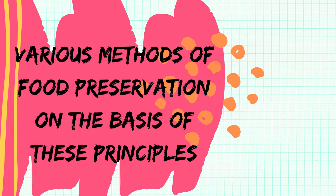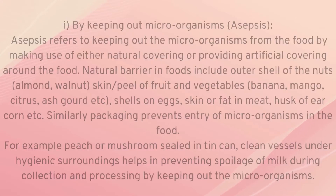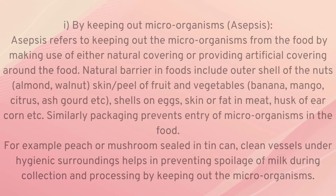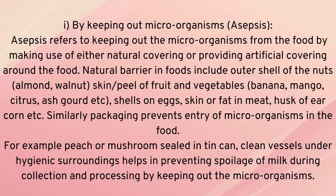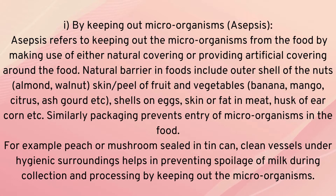Asepsis refers to keeping out microorganisms from food by making use of either natural or artificial covering. Natural barriers in foods include outer shells of nuts such as almonds and walnuts, skin or peel of fruits and vegetables such as banana, mango, citrus fruits, and eggplant, shells of eggs, skin of meat, and husks of cereals. Similarly, packaging prevents entry of microorganisms; for example, meat or mushrooms sealed in a tin can. Using clean vessels under hygienic surroundings also helps in preventing spoilage of milk during collection and processing.